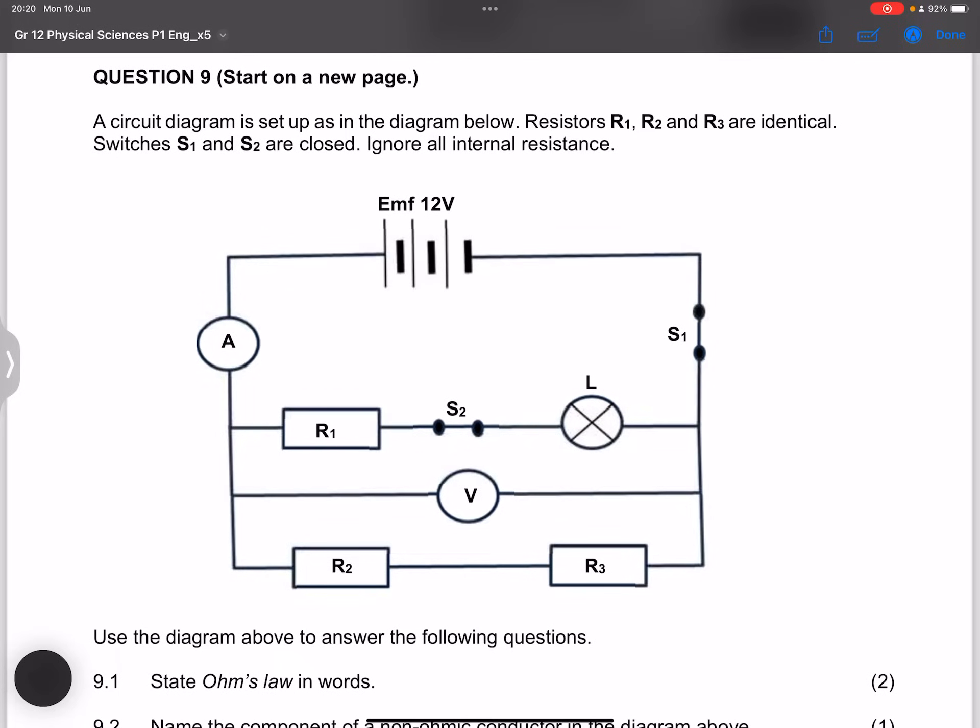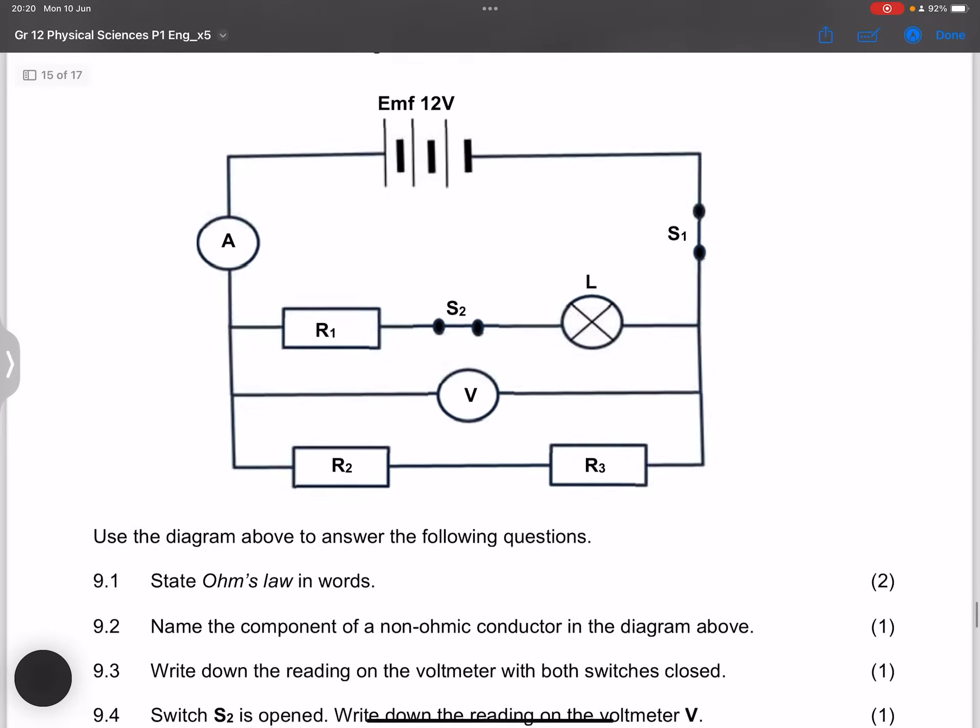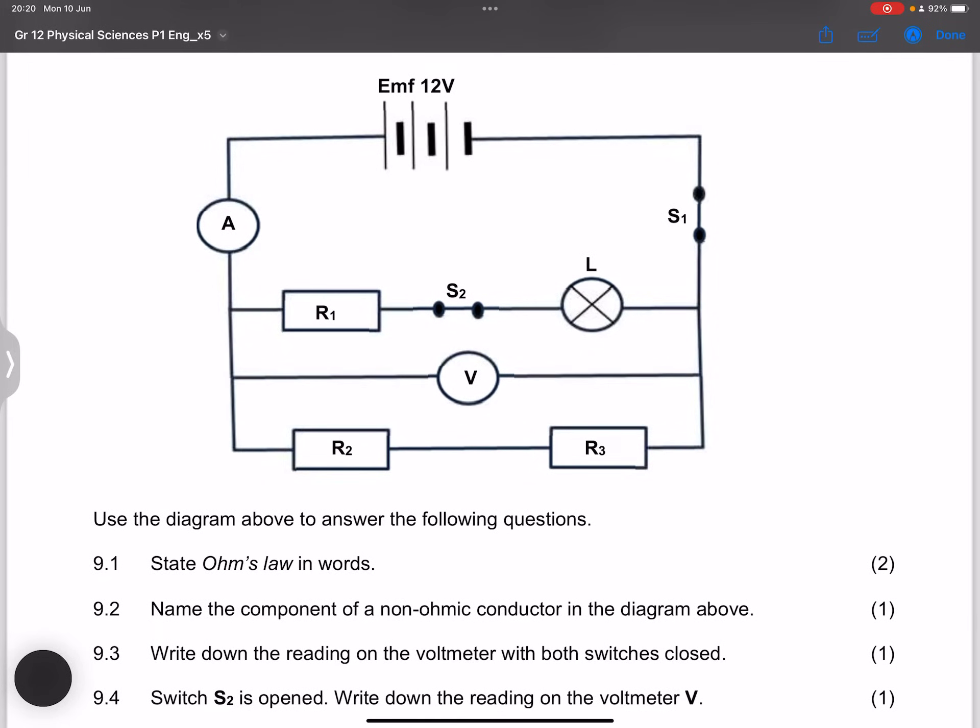Now let's go on to question 9. We've got a circuit diagram that is set up as in the diagram below. They say resistors R1, R2, and R3 are identical, switches S1 and S2 are closed. They say ignore internal resistance. Use the diagram above to answer the following questions.